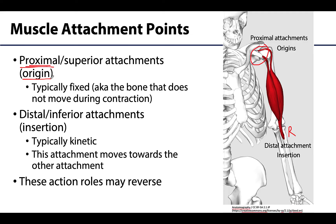Proximal attachments are typically the fixed bone during major concentric contractions — meaning that bone is not moving. For the biceps brachii, one of the major movements is flexion of the forearm: the forearm bones move upward. The distal attachment, or insertion site, is the movable bone — when that muscle contracts and shortens, it will pull that bone up towards the proximal attachments. In this case that would be the radius. You always need one immovable bone to allow more precise and safe movement on the other end.